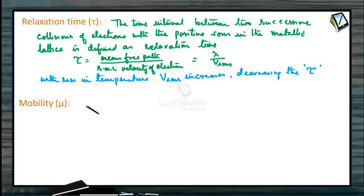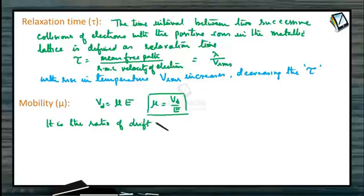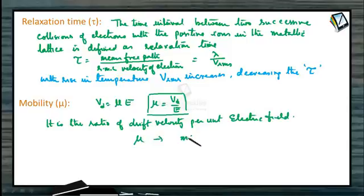Drift velocity per unit electric field is called mobility. We can write drift velocity equals mu times E, so drift velocity by E equals mu, the mobility. It is the ratio of drift velocity per unit electric field. Its units are meter squared per volt second.